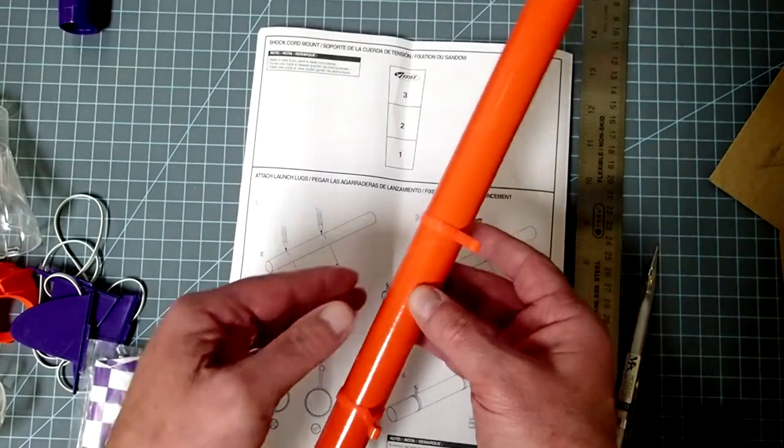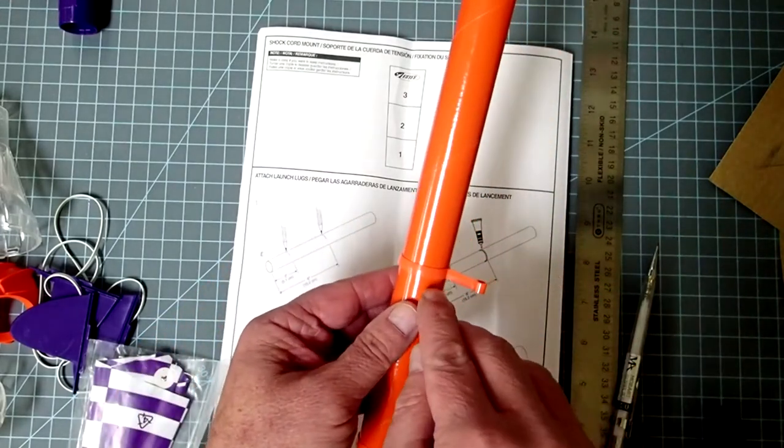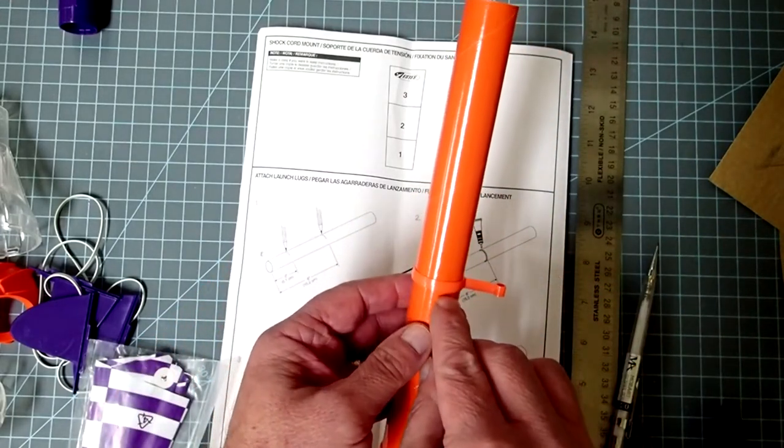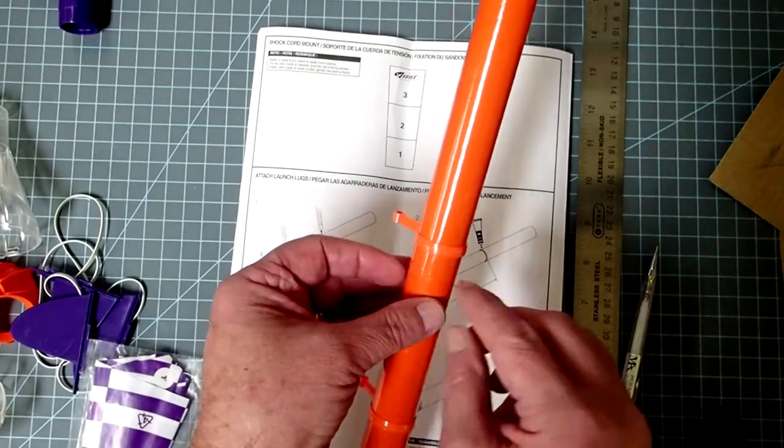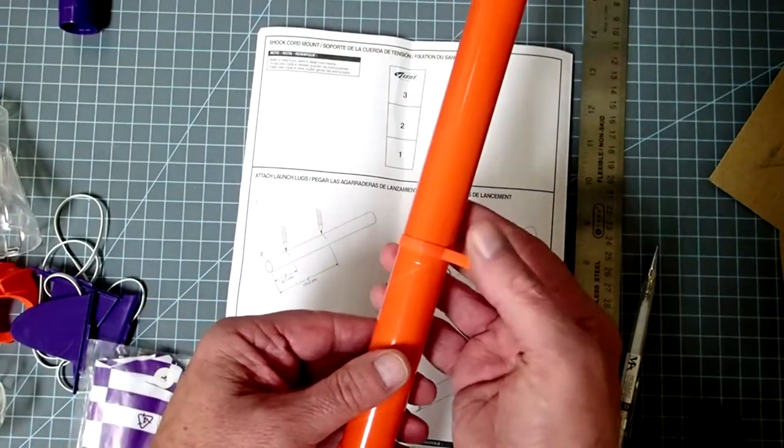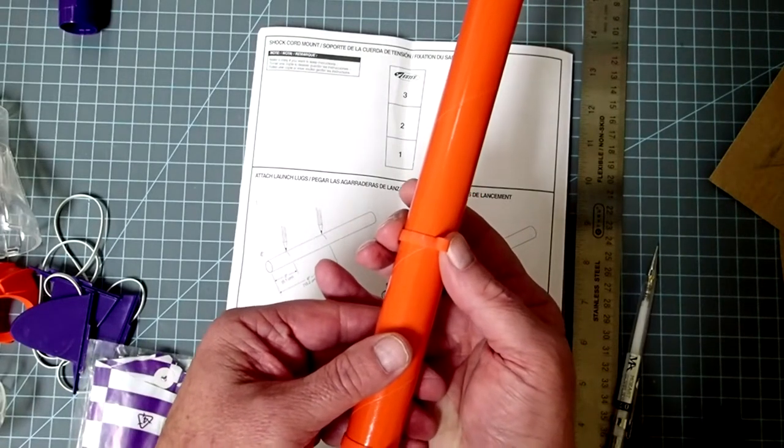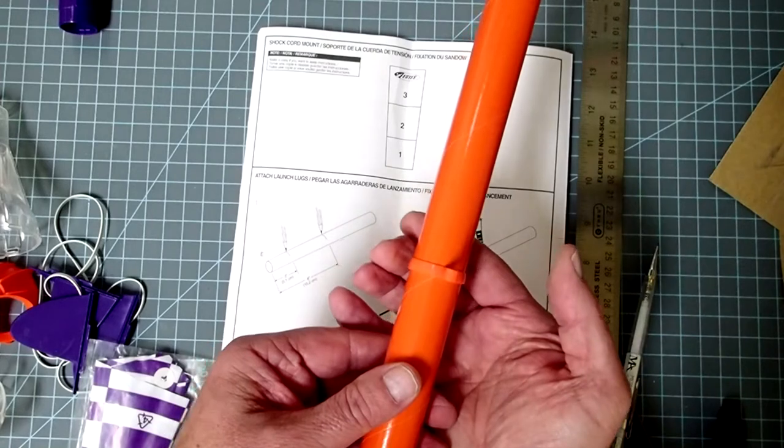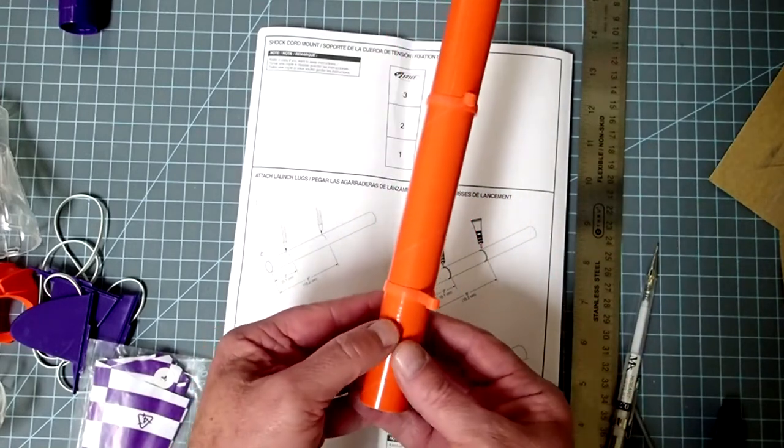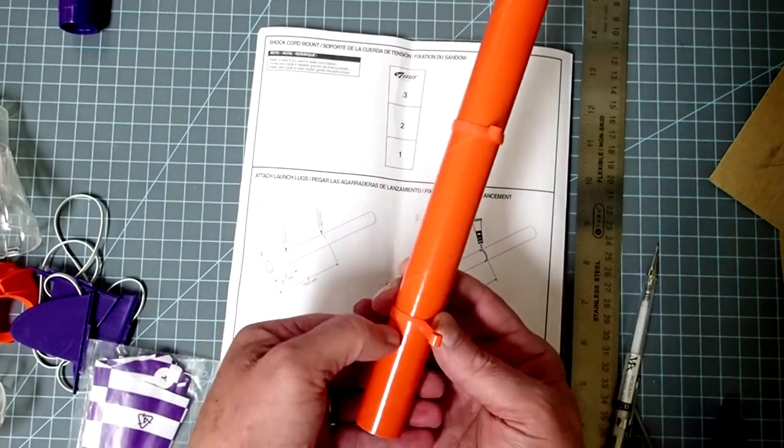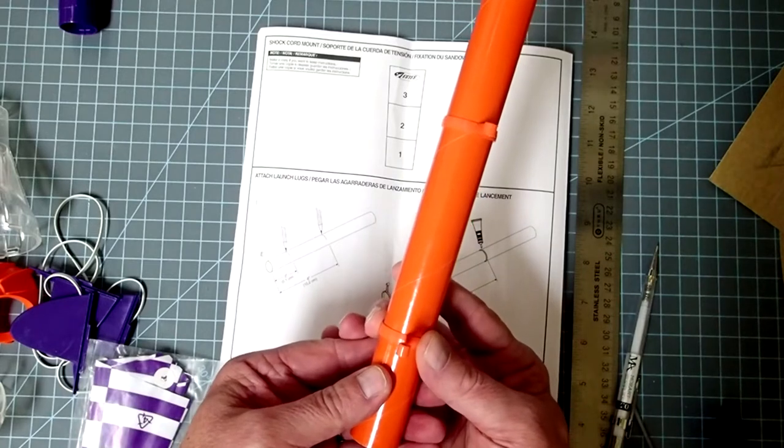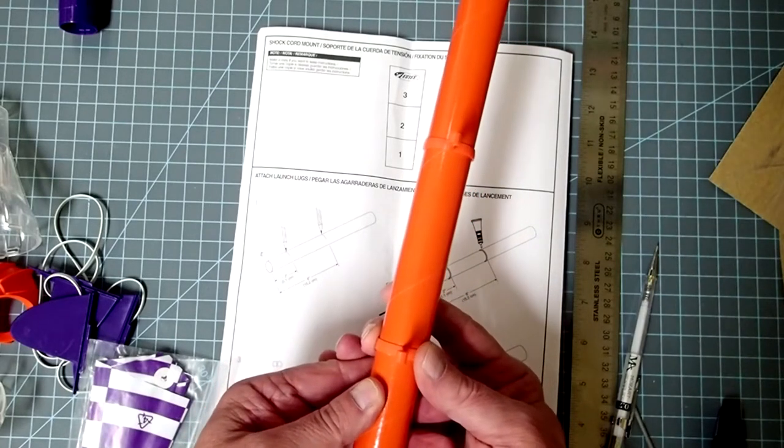So, what I recommend is go ahead and dry fit these on and then move them a little bit beyond each of our marks there. And then use that as a guide so you're going to run glue just below each of these rings.